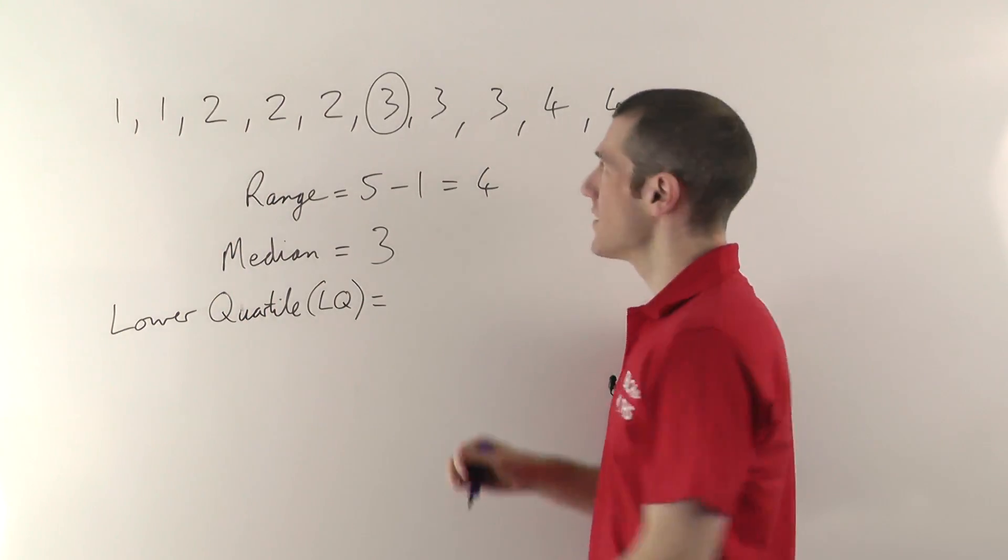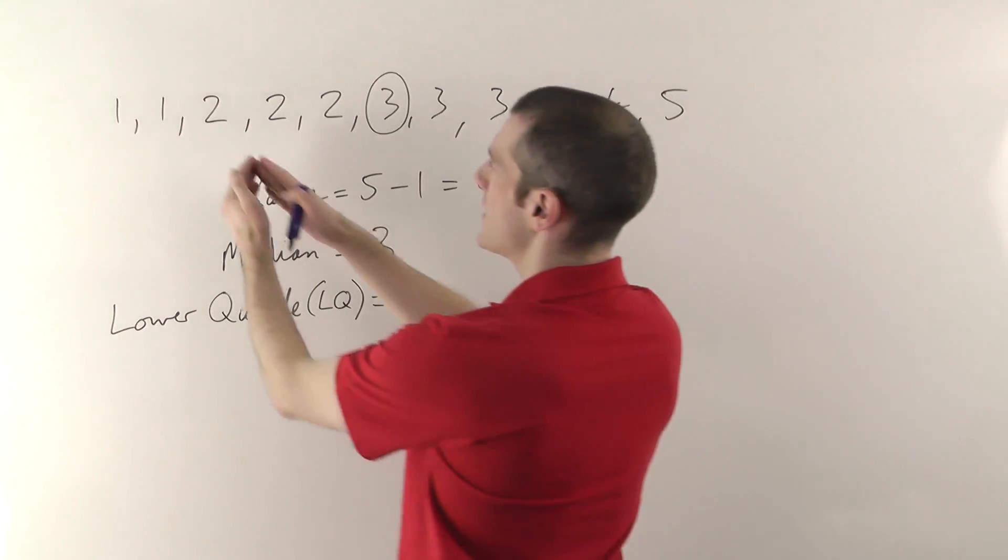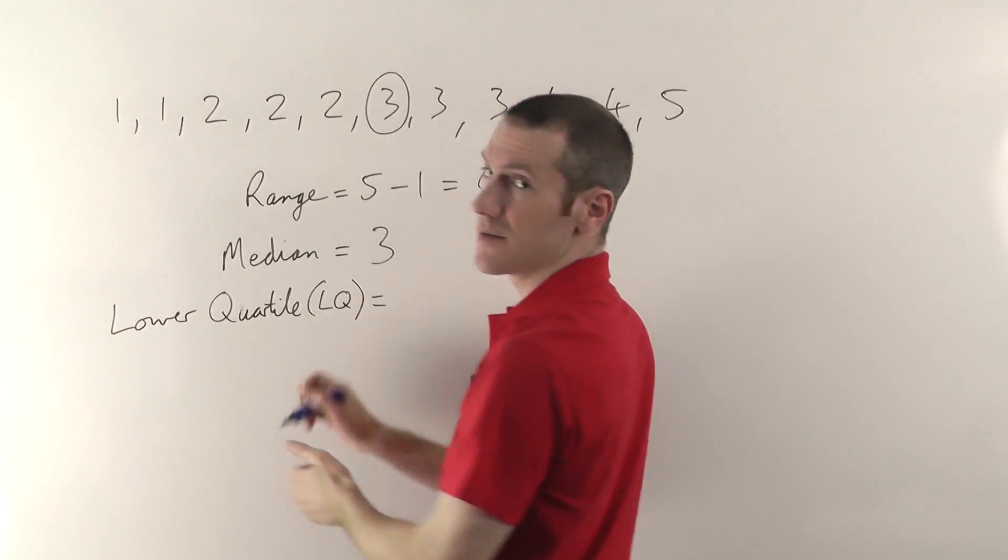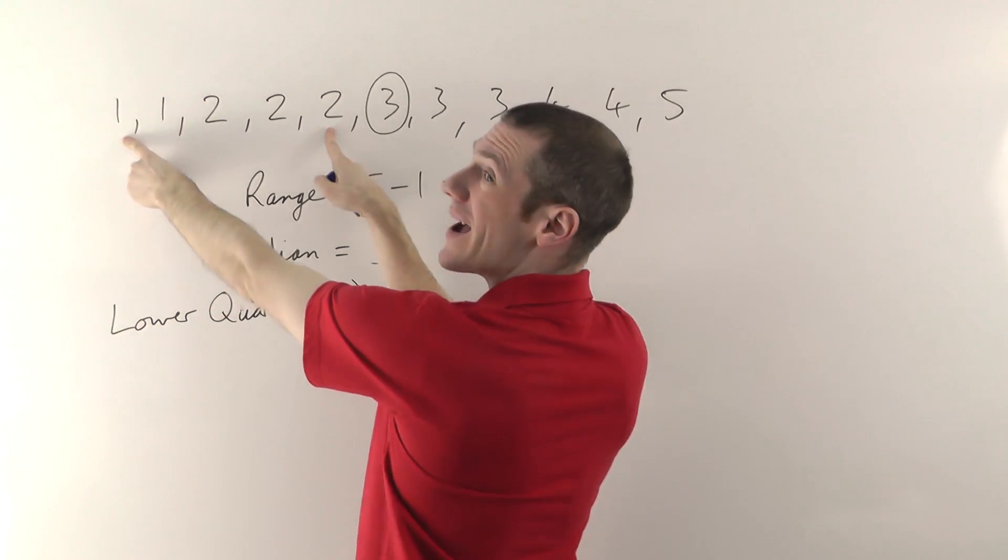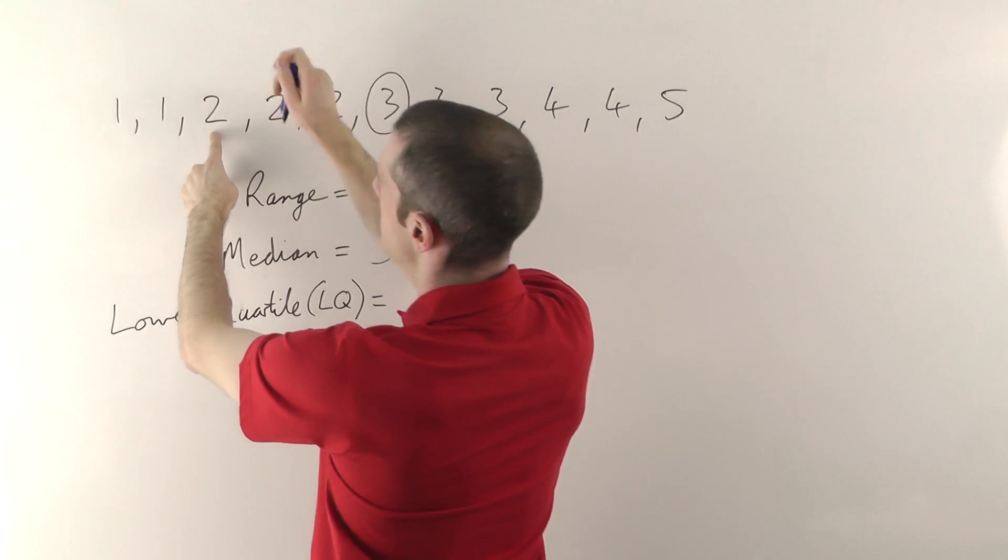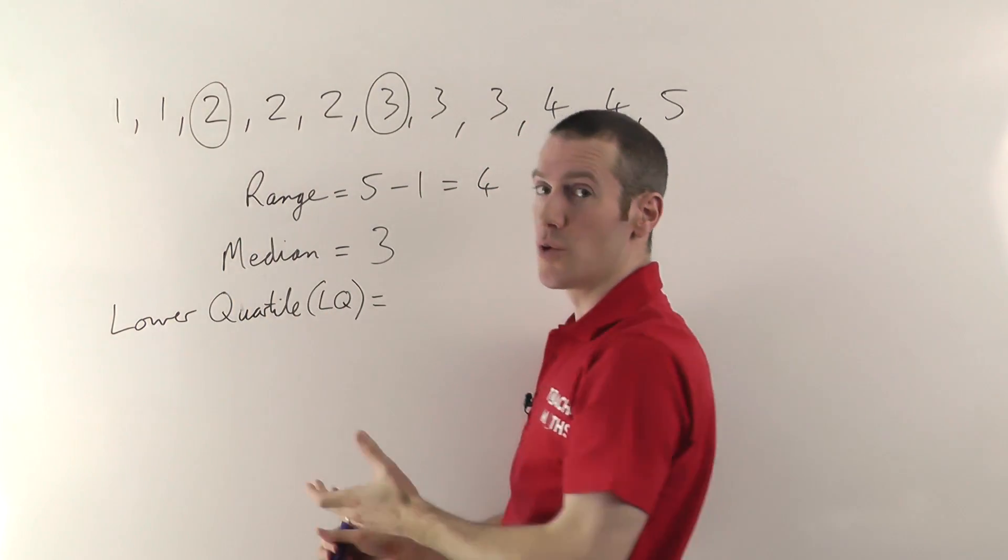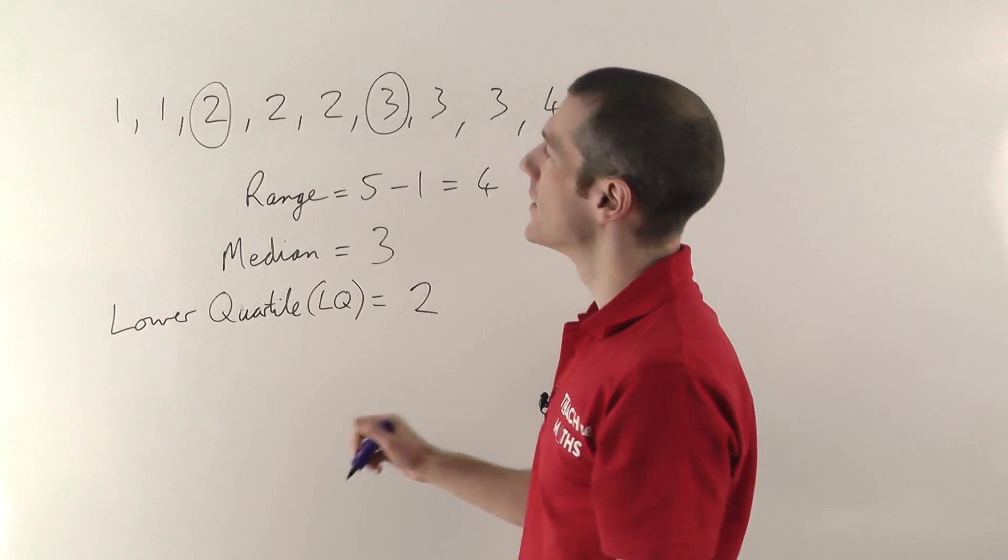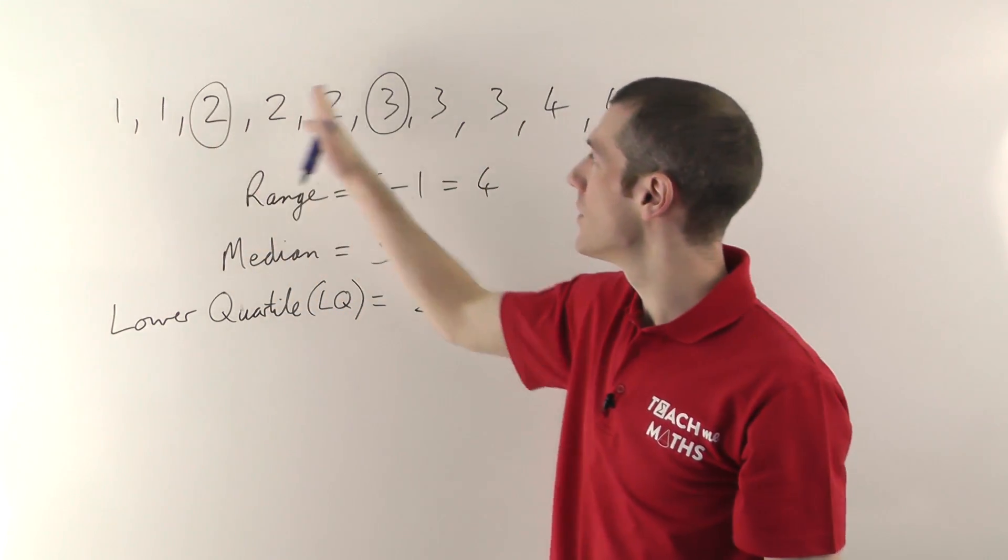Now the easiest way to do that, you don't need to pair from the end or anything, once you've found the median, just take the list of numbers that are on the left of the median, the first half, don't include the median, so start with those two, and pair your way into the middle. So that pair, that pair, that's the one in the middle of the first half, so that is the lower quartile. It's 2. That's the one that's a quarter of the way through. So that'd be a quarter of the way through, halfway through.